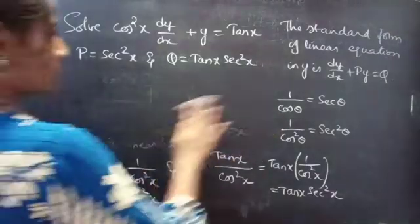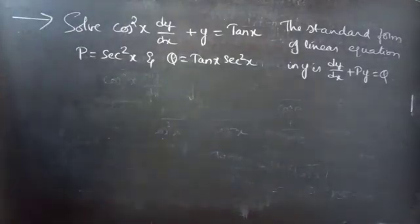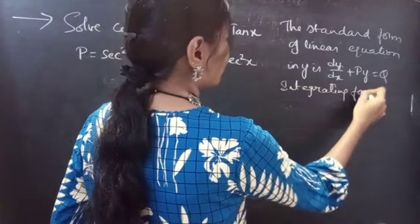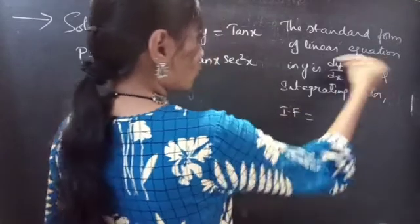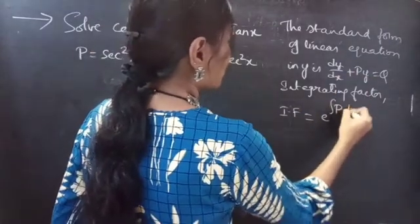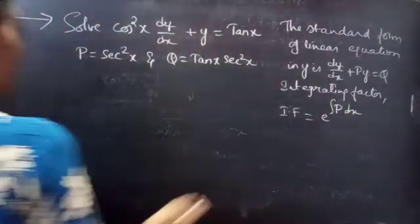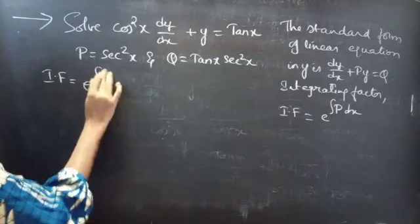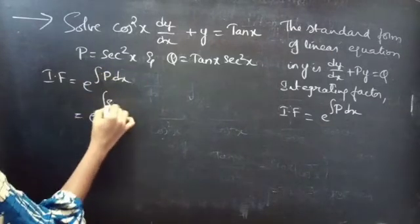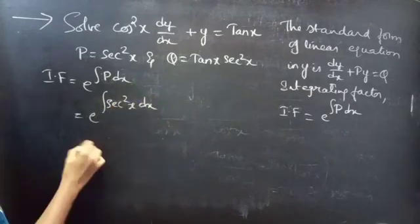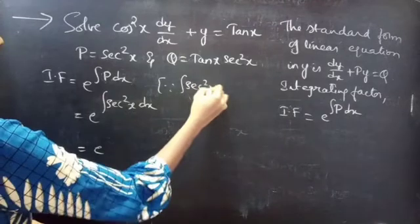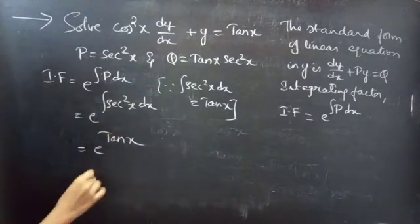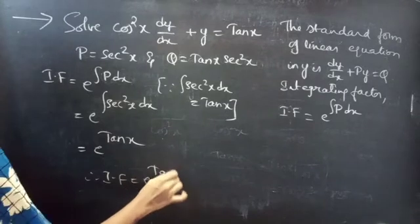Now, we need to find the integrating factor. We know that the integrating factor (IF) of this equation is given by e^(∫P dx). Now, using this formula, we'll find the integrating factor. Integrating factor = e^(∫sec²x dx). Since ∫sec²x dx = tan x, therefore our integrating factor is e^(tan x).